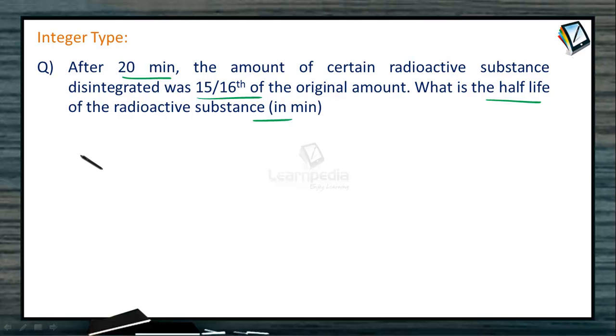So here the initial substance is converted into half of the original value in one half-life and that is further converted into one-fourth of the original value in one more half-life and in next half-life that is converted into one-eighth and in the next half-life that is converted into one-sixteenth.